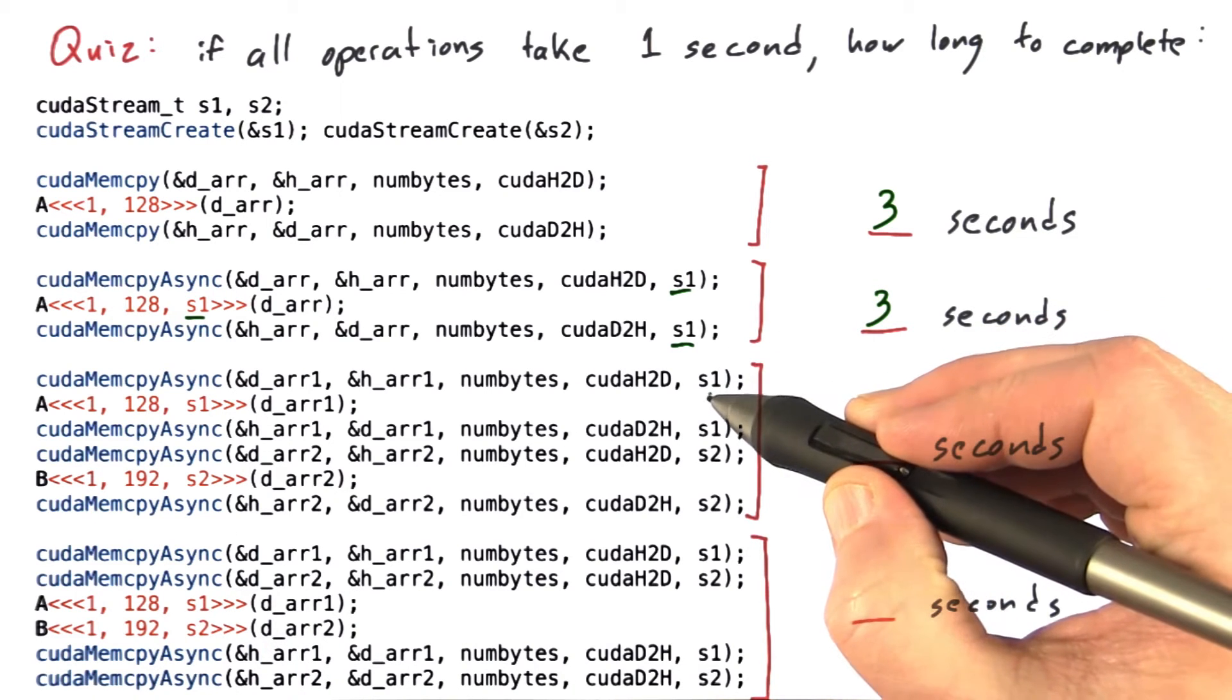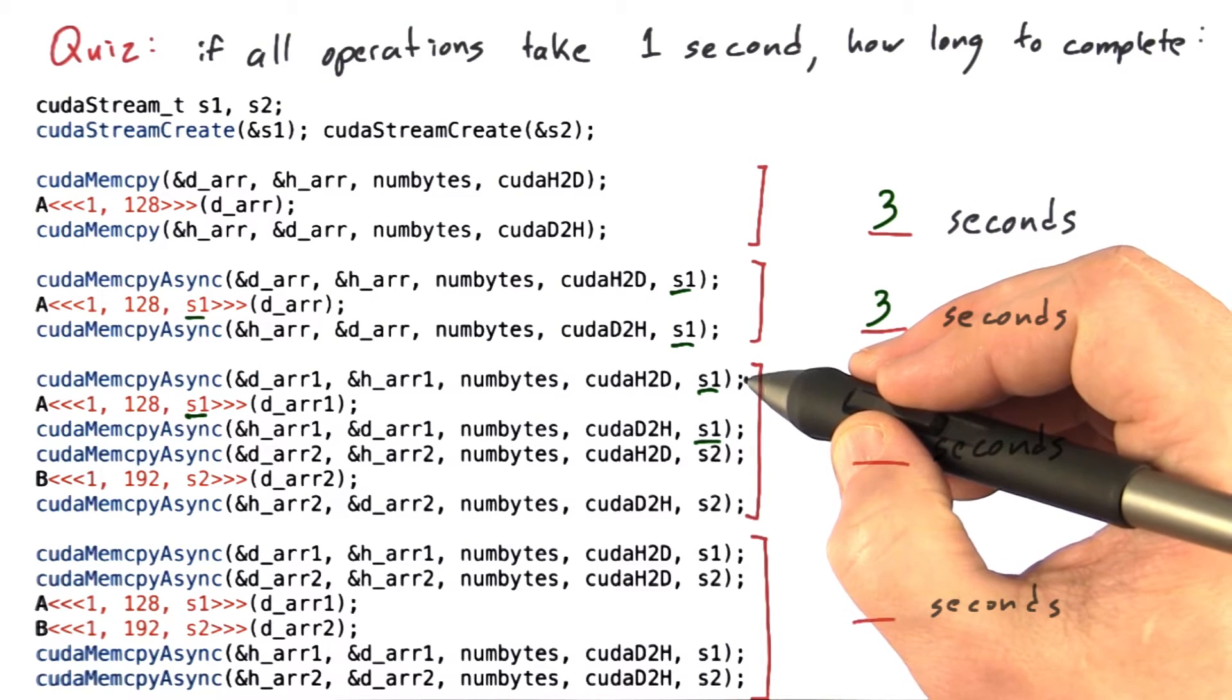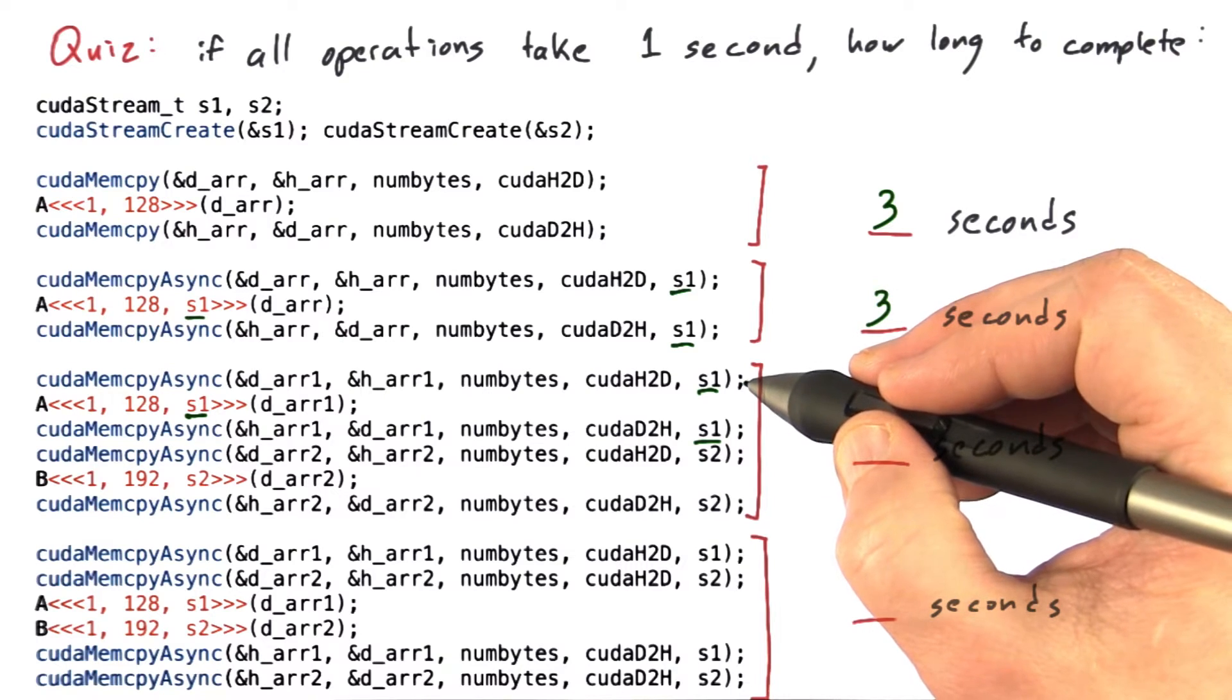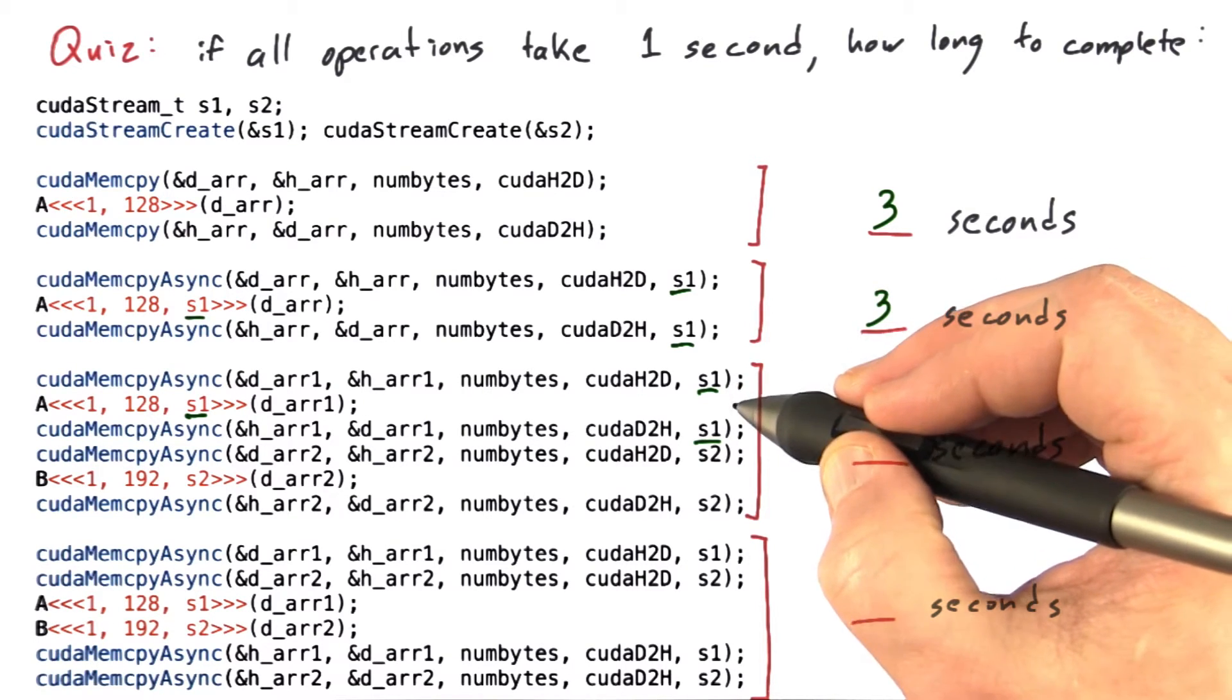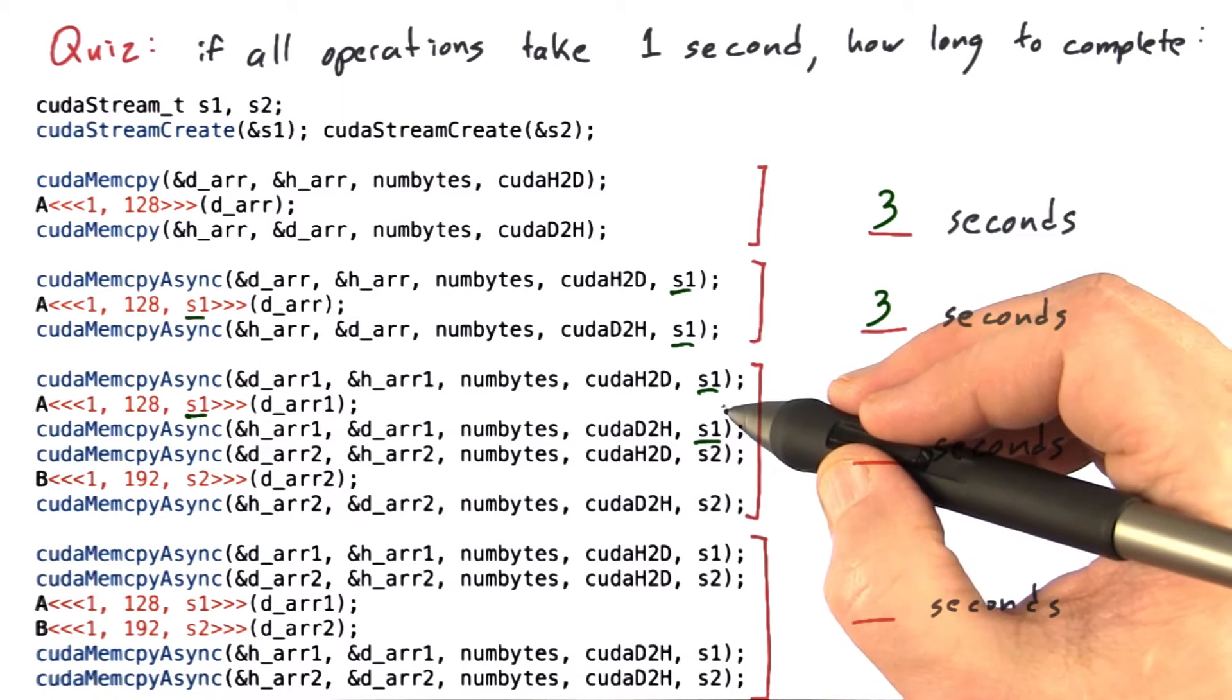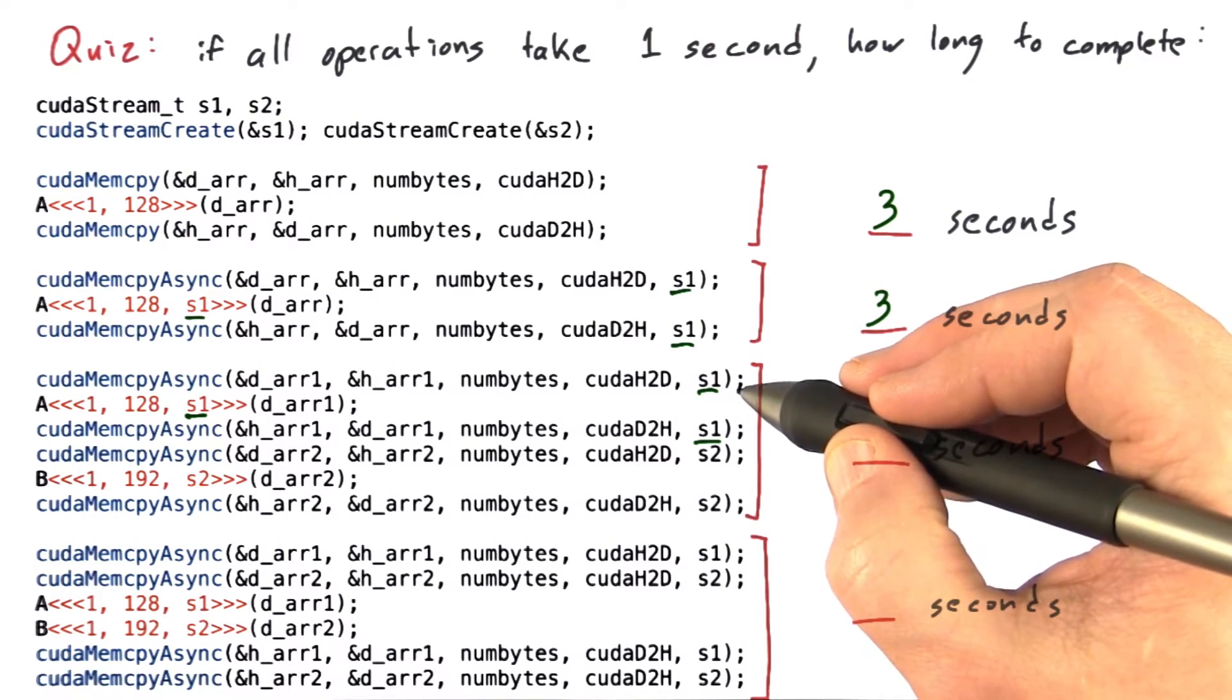The first three operations are in stream 1. cudaMemcpyAsync will be called and start a memory copy on the GPU, then CPU execution will continue. The next statement will happen. We don't stop and wait for this memcopy to finish before executing the next statement, which is the launch of kernel A. Kernel launches are always asynchronous. So in effect, this queues up the launch of kernel A, which will run on the GPU after this memcopy has finished.